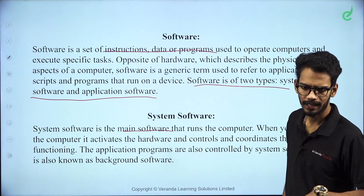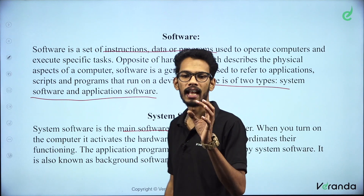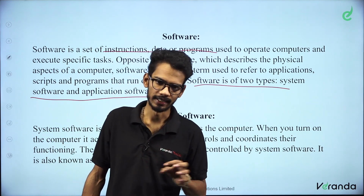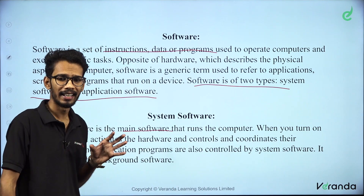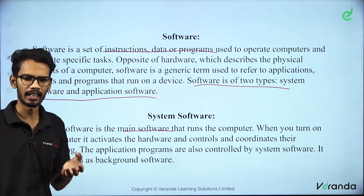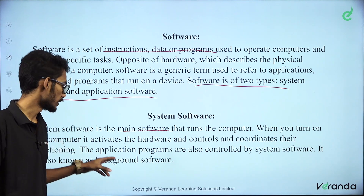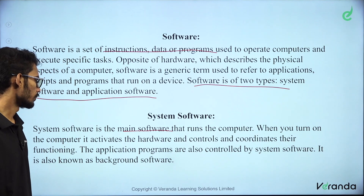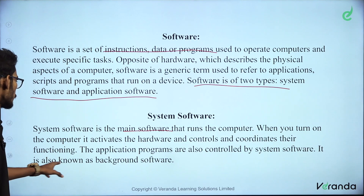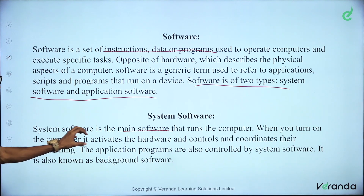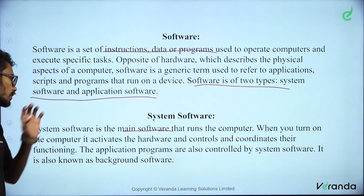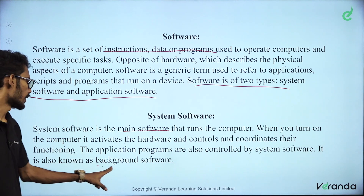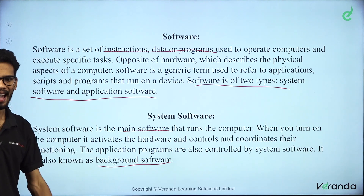What is application software? If you do a certain task, you can do it and control it. Application software and other programs are also controlled by system software. System software is also known as background software.